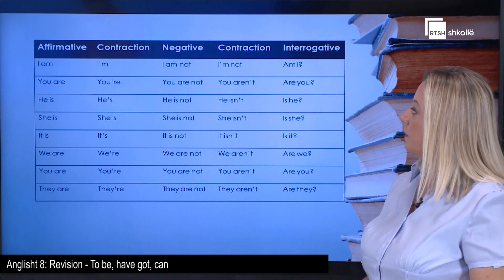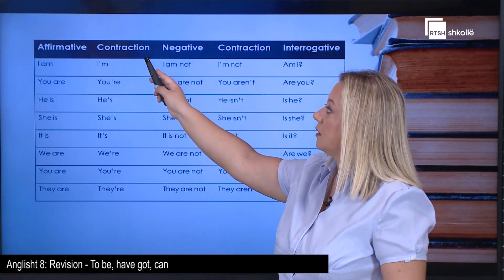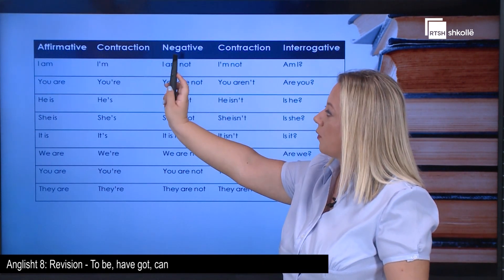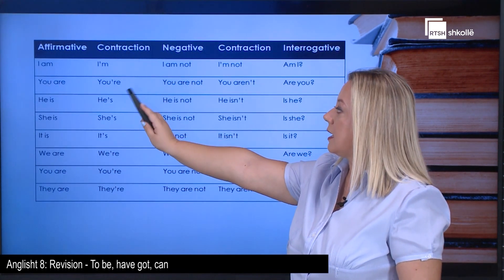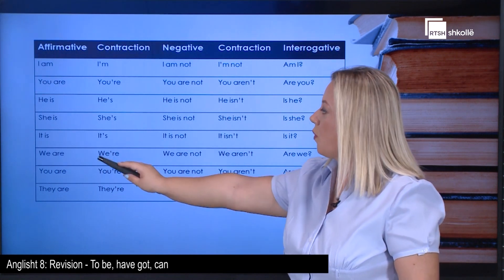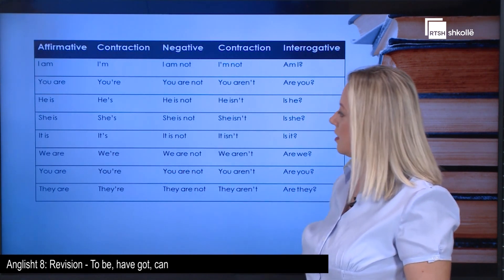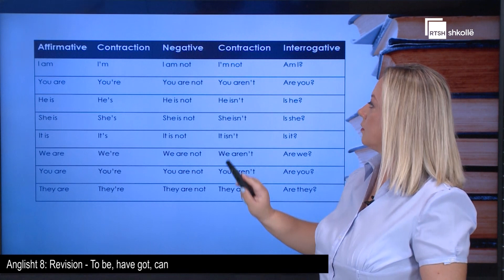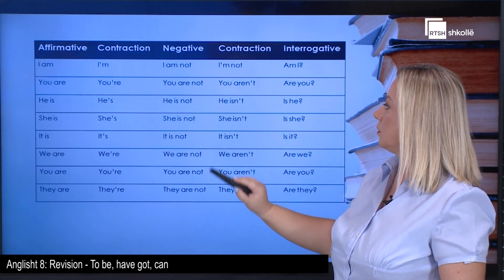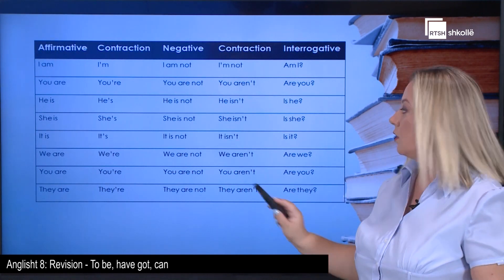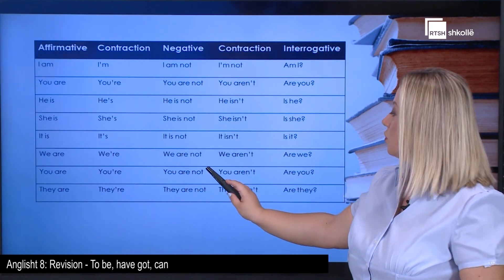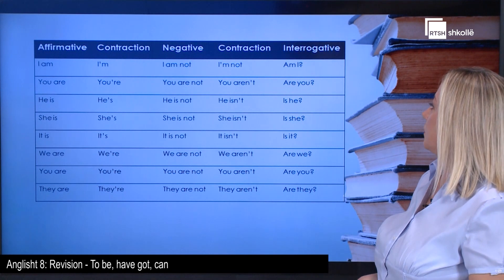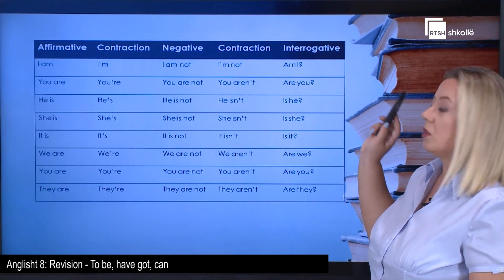Let's conjugate the verb to be in the present simple. Be very careful with the contracted form. In the affirmative form: I am, you are, he/she/it is, we are, you are, they are. To form the negative, we add the negative particle 'not': I am not, you are not, he/she/it is not, we are not, you are not, they are not.